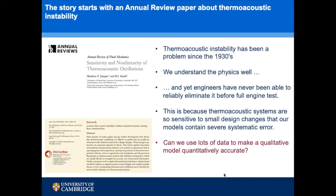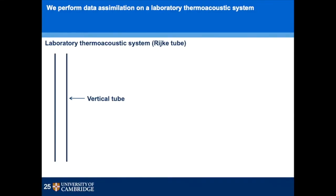So the idea of this project is to say: instead of trying to make a quantitatively accurate model a priori, can we start from a qualitative model of the physics — which we have quite a lot of confidence in — and then use lots of data from experiments to make that qualitatively accurate model quantitatively accurate? The idea is to make it so over the range we test, and if it's a good physics-based model it should extrapolate beyond those regions.